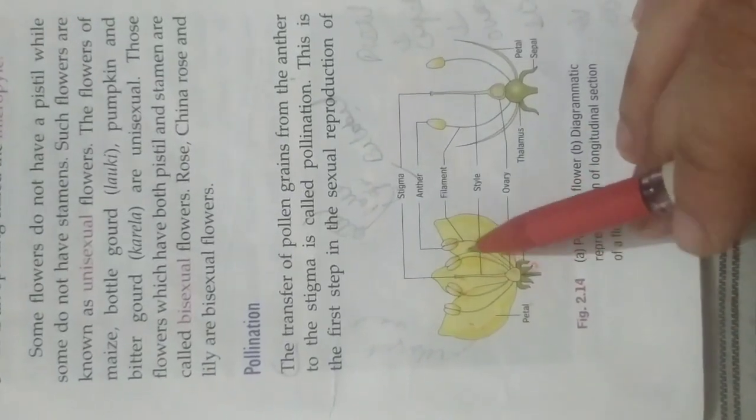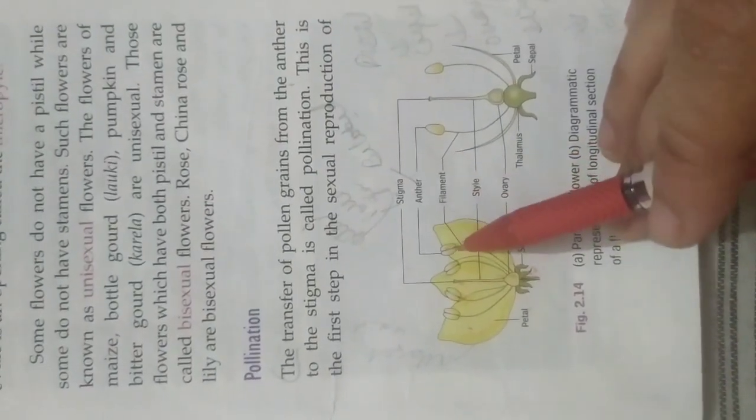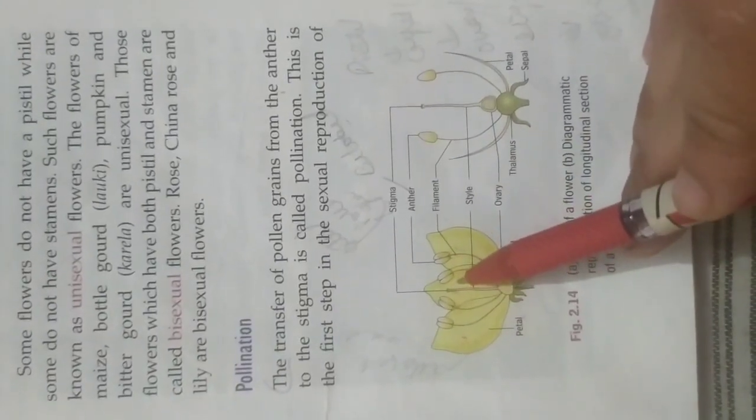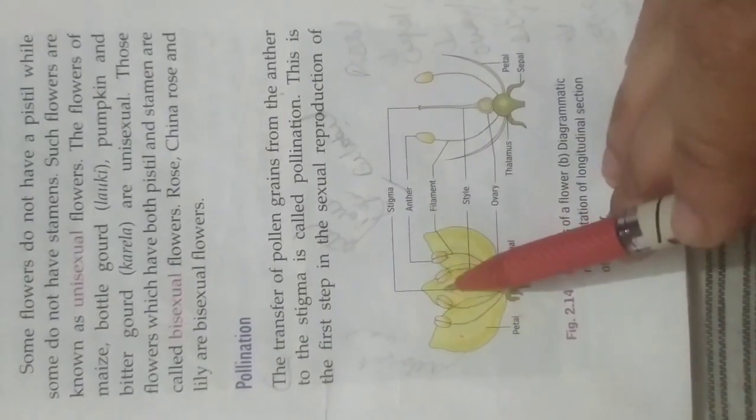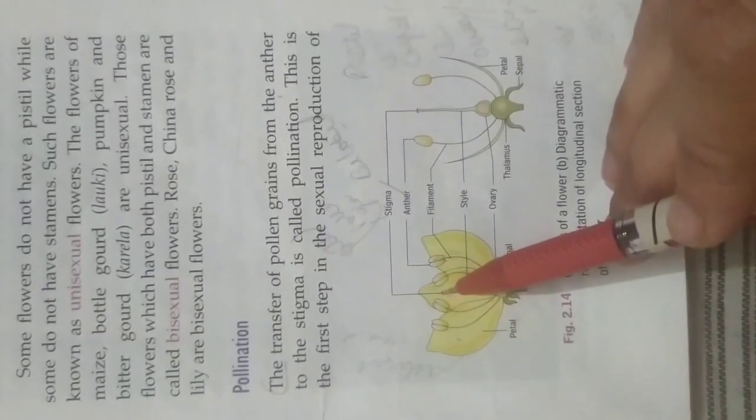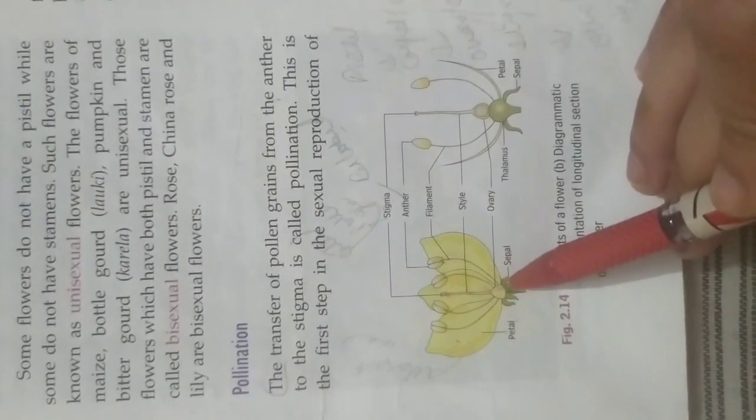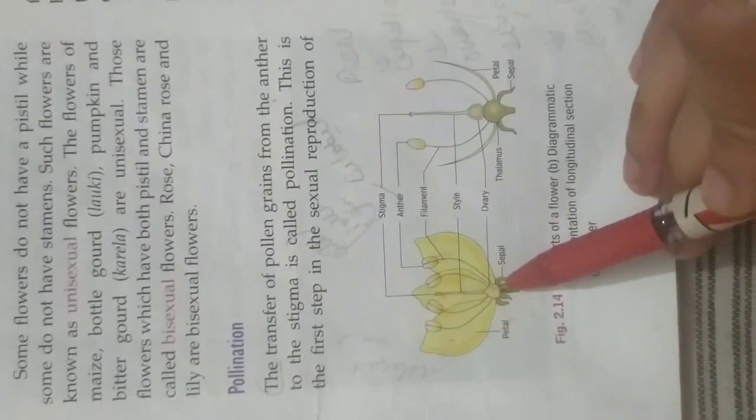This is the male part known as the androecium. It consists of anther which is bilobed and the filament. And this is the female part known as the gynoecium. This is the stigma. Then this is the style and this is the swollen part is known as the ovary which consists of the ovules.